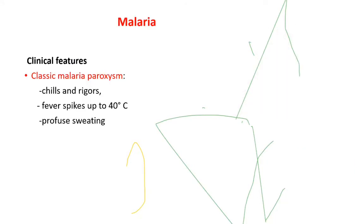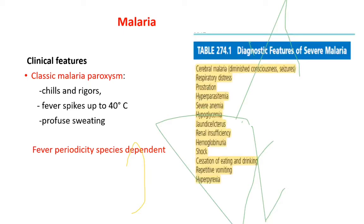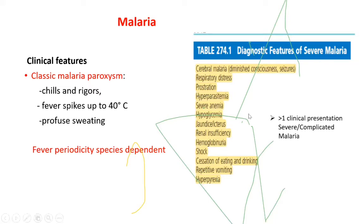Malaria: classical paroxysm includes chills, rigor, fever spikes, and profuse sweating. Fever periodicity depends on the species. Diagnostic features of severe or complicated malaria include cerebral malaria, respiratory distress, prostration, hyperparasitemia (more than 5% parasite load), severe anemia, hypoglycemia, jaundice, renal insufficiency, hemoglobinuria, shock, cessation of eating and drinking, repetitive vomiting, and hyperpyrexia (mostly more than 106°F). Any one of these clinical presentations leads to the diagnosis of severe and complicated malaria.